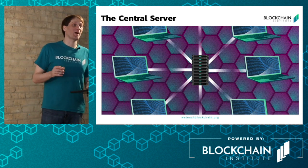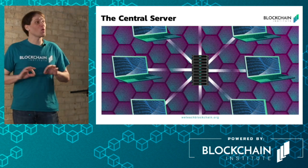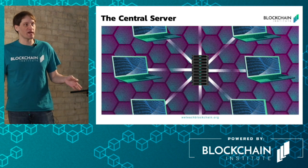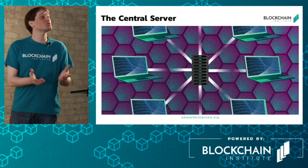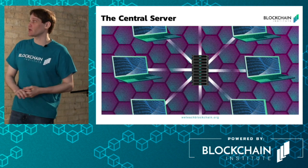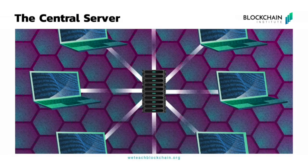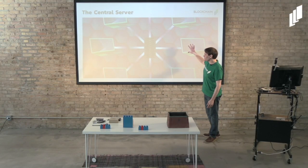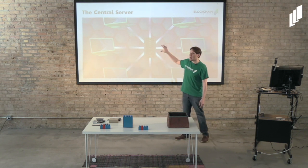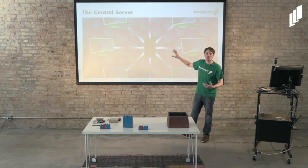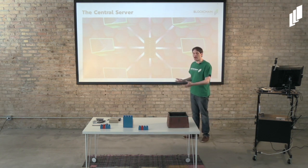This client-server model is basically how our whole internet works today. For example, let's say you're sending a Facebook message to a friend. What happens is that message does not go directly from you to your friend — it has to be processed through a central server to execute the action.